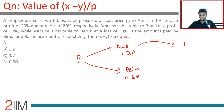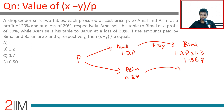Amal sells to Bimal at a profit of 30%, so he sells at 1.2P × 1.3, which is 1.56P. Asim sells his table to Barun at a loss of 30%, so he sells at 0.8P × 0.7, which is 0.56P.